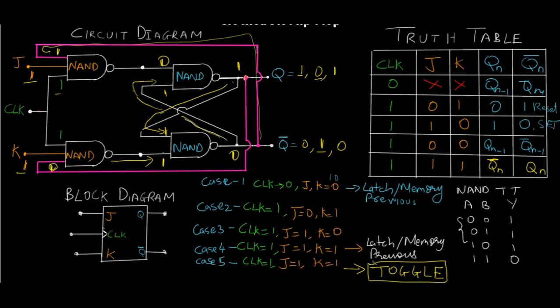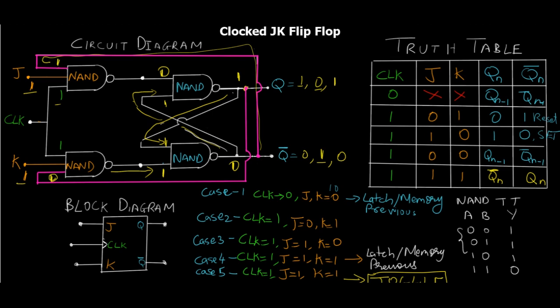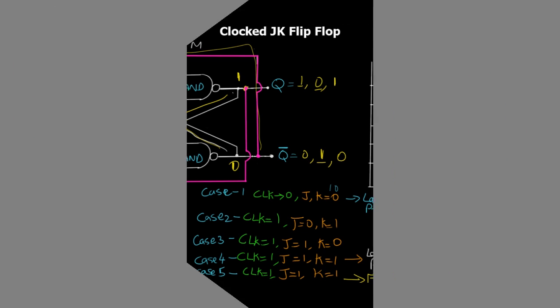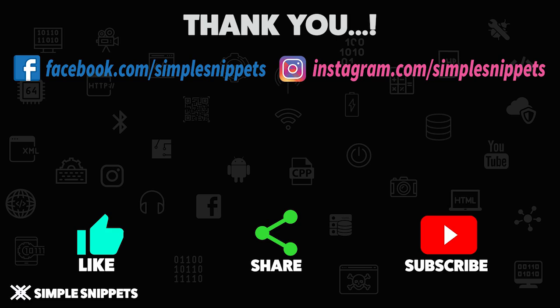This is the only difference in the truth table of SR flip-flop versus JK flip-flop. Instead of the race condition — which was an undesirable output — we get a toggle output where the previous output is complemented. This toggle condition is used in switching between different values in digital circuits, making it very useful. That's it for this video — this was the major difference between SR flip-flop and JK flip-flop and the working of JK flip-flop. If you like this video give it a thumbs up, share it with your friends, and make sure you subscribe to this channel.